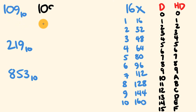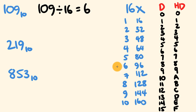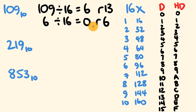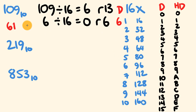First, 109 divided by 16: using the table, 6 times 16 is 96, so we get 6 with a remainder of 13. Then 6 divided by 16 gives 0 with a remainder of 6. Reading remainders from bottom to top: 6 corresponds to 6, and 13 corresponds to D. So 109 base 10 equals 6D base 16.